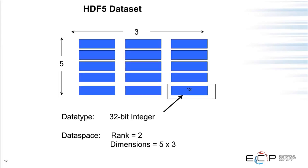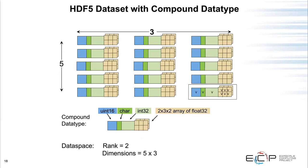A simple dataset example: the metadata says the data type is a 32-bit integer, so each array element is an integer; the data space is 2D, 5×3. A more complicated example has the same 5×3 data space but a compound data type with four fields: an unsigned 16-bit integer, a character, a 32-bit signed integer, and a nested array field whose base type is a 32-bit float — perhaps representing a matrix field in the application.